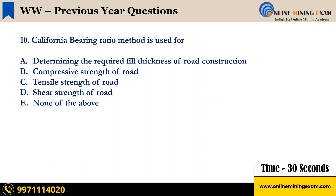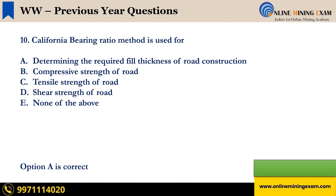California bearing ratio method is used for: A) Determining the required fill thickness of road construction, B) Compressive strength of road, C) Tensile strength of road, D) Shear strength of road, E) None of the above. Your time starts now. Time up. The correct answer is A, determining the required fill thickness of road construction.